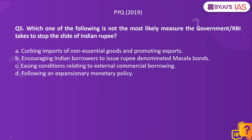Let us take up a previous year question from the prelims paper 2019. Which one of the following is not the most likely measure the government or RBI takes to stop the slide of Indian rupee? Option B: encouraging Indian borrowers to issue rupee-dominated masala bonds. Option C: easing conditions relating to external commercial borrowings. Option D: following an expansionary monetary policy. The correct answer is option D. Curbing imports of non-essential goods will lessen the demand for dollars, and promoting exports will help increase the flow of dollars into the country — together helping control rupee depreciation.